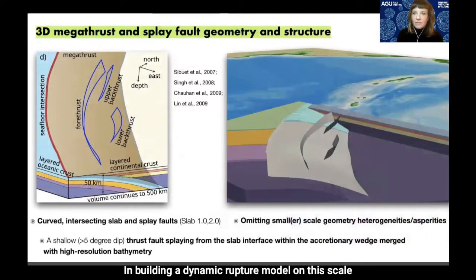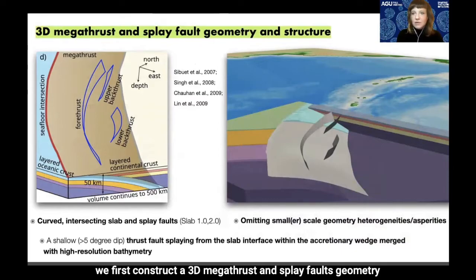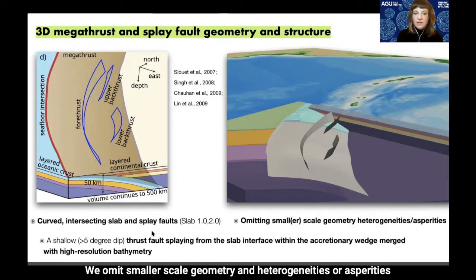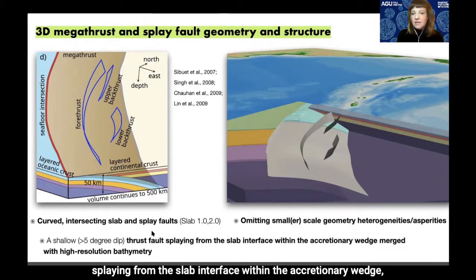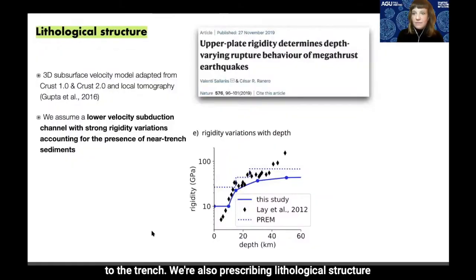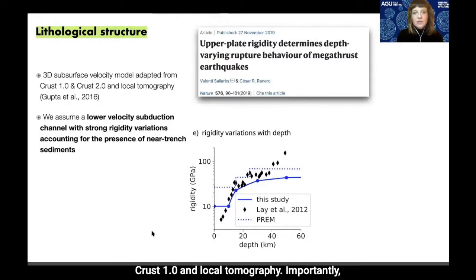In building a dynamic rupture model at this scale, we first construct a 3D megathrust and splay fault geometry and structural model. We prescribe a curved slab intersecting with splay faults and local bathymetry, omit monoscale heterogeneities, and include very shallowly dipping thrust faults merging with high-resolution bathymetry to allow potential rupture all the way to the trench. We also prescribe a 3D subsurface velocity model adapted from CRUST 1.0 and local tomography, and assume a lower-velocity subduction channel with strong rigidity variations accounting for near-trench sediments.